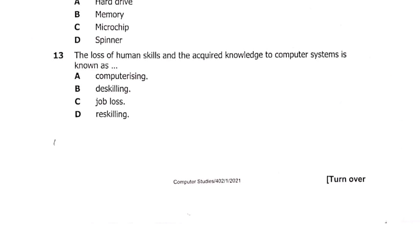Question 13: the loss of human skills and acquired knowledge to a computer system is known as — A: computerizing, B: deskilling, C: job loss, or D: reskilling. The answer to question 13 is B — deskilling.